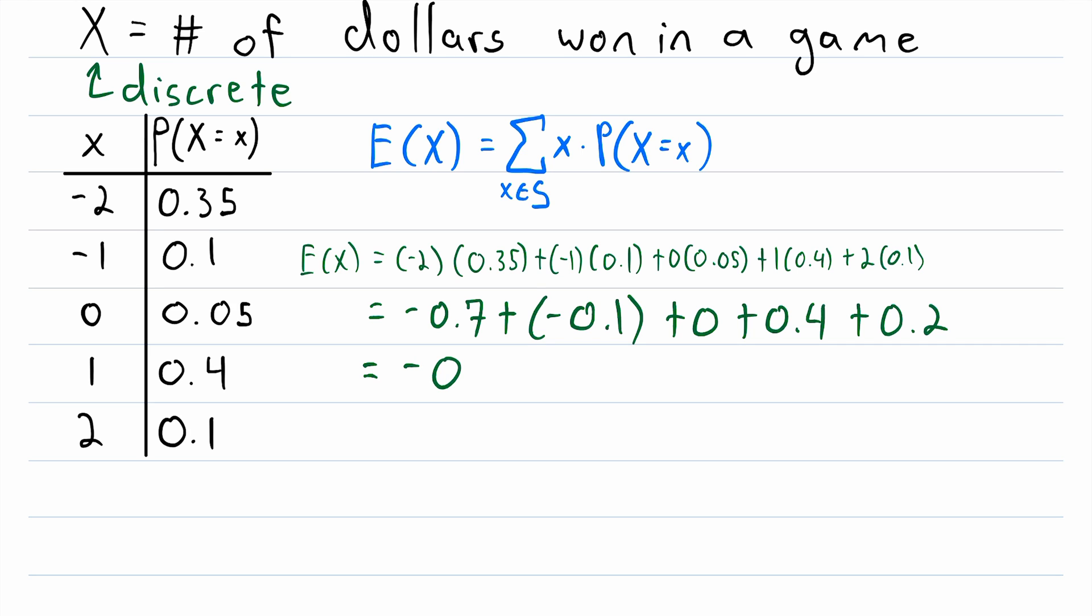So the expected value is negative 0.2. So what does this mean that the expected value of the random variable x is negative 0.2?